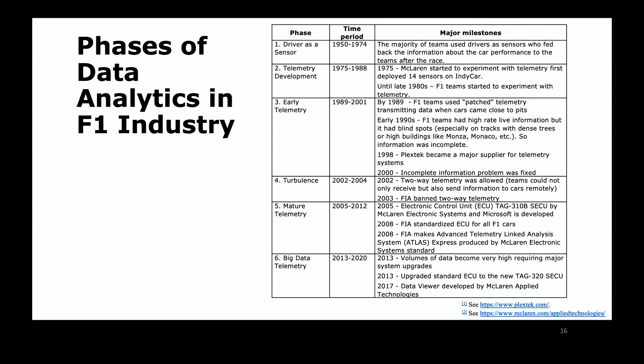In this table, you can see all six stages we have just identified: Driver as a sensor from 1950 to 1974; telemetry development from 1975 to 1988; early telemetry from 1989 to 2001; turbulence from 2002 to 2004; mature telemetry from 2005 to 2012; and big data telemetry from 2013 to 2020.